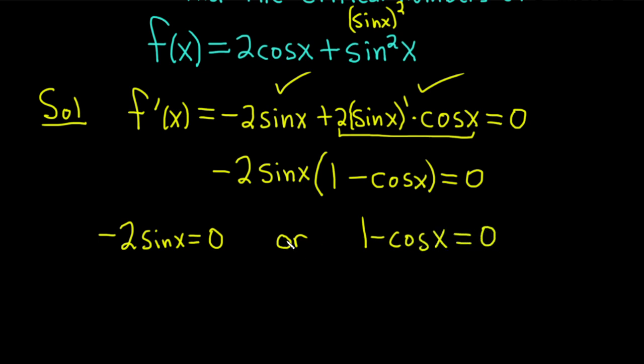By the way, or in mathematics means one or the other or both. So both of these are going to lead to critical numbers. In the first equation, negative 2 sine x equals 0, we just divide by negative 2. We get sine x equals 0.